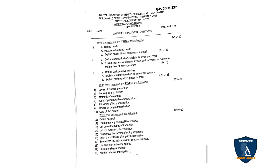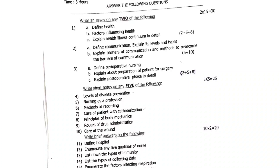Next is Nursing Foundations, February 2022 question paper. 1A — define health. 1B — factors influencing health. 1C — explain health-illness continuum in detail. 2 plus 5 plus 8 marks. Second question: define communication, explain its levels and types. 2B — explain barriers of communication and methods to overcome them, 5 plus 10 marks. 3A — define perioperative nursing, 2 marks. 3B — explain preparation of patient for surgery, 5 marks. 2C — explain post-operative phase in detail, 8 marks.